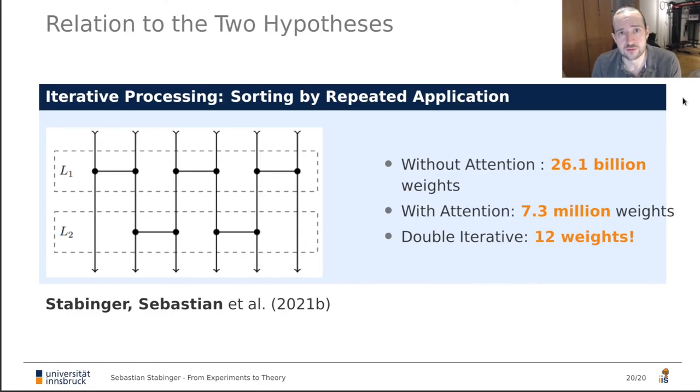So how does iterative processing relate to all of this? The idea here is that we can send the list of numbers through a neural network, take the output and send it again through the same network and do that multiple times. And if we're allowed to do this, the sorting network that we can use is much simpler. And we are able to reduce the number of weights we need without attention to 26.1 billion with attention to 7.3 million weights. And if we are allowed to do something akin to double iterative processing where we can have a small network that is applied in sequence to pairs of numbers, then we can actually solve this with just 12 weights, showing that iterative processing seems to be really important to keep the number of weights down.